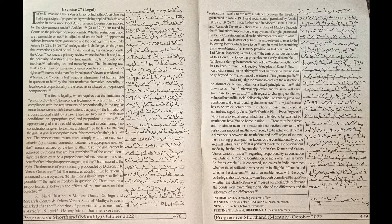Whether restrictions placed are reasonable or not is adjudicated on the basis of appropriate balance between rights guaranteed and the control permissible under Articles 19(2) to 19(6).